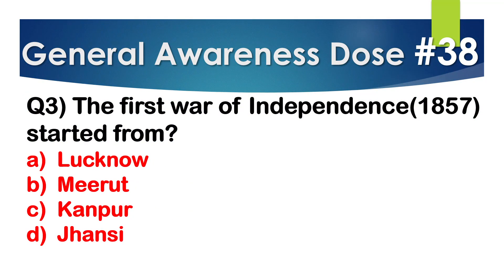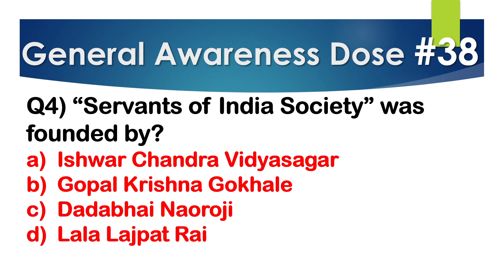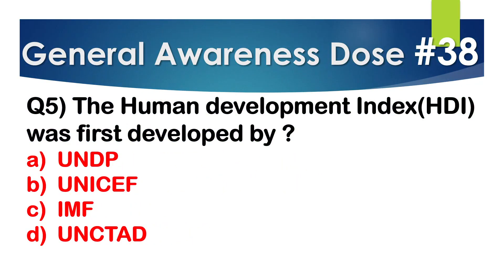Next question: The first War of Independence, 1857, started from where? Correct answer: Option B — Meerut. Next question: The Servants of India Society was founded by whom? Correct answer: Option B — Gopal Krishna Gokhale.